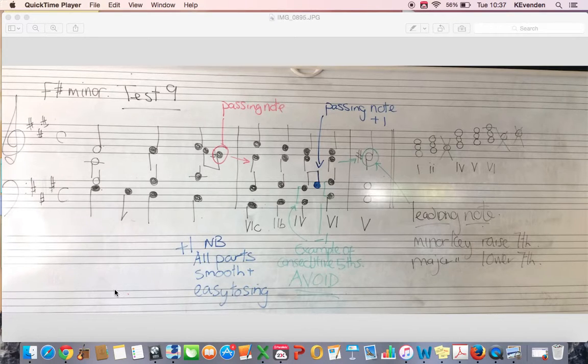Now here is an example of an imperfect cadence. Imperfect cadences for Bach or this type of thing are unusual, and in the actual exam I don't think I've seen an imperfect cadence. They always tend to be perfect cadences.